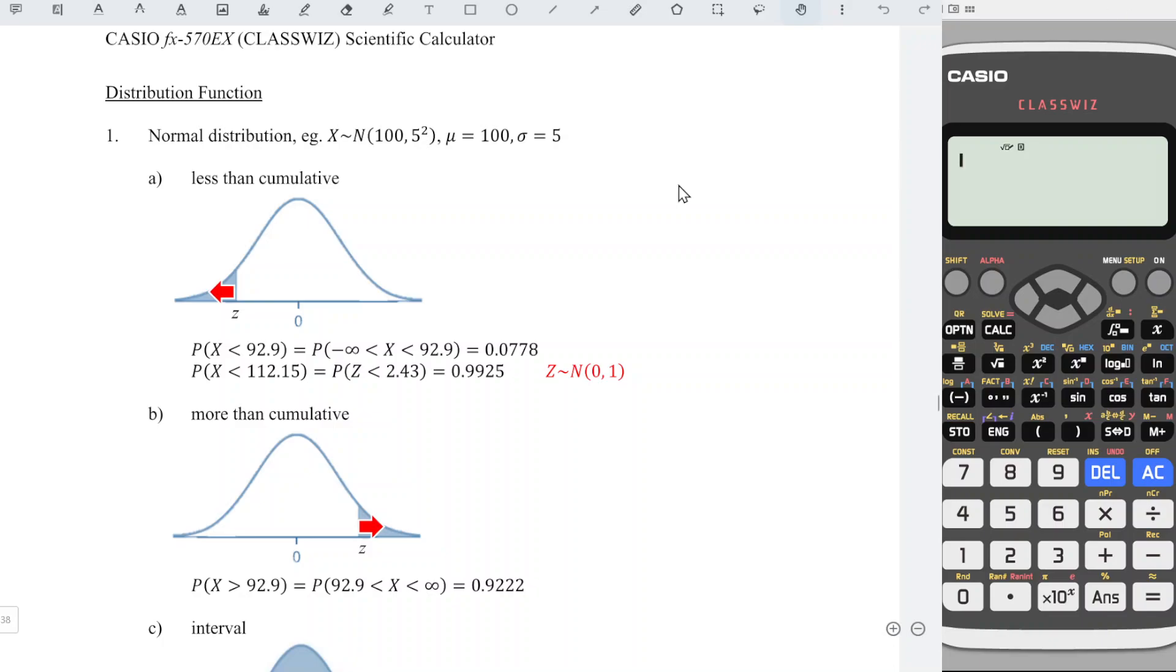We will learn how to obtain the probability for a normal distribution by using Casio calculator. Consider that random variable x follows a normal distribution with mean 100 and variance 5 squared. 1A: less than cumulative. If we are asked to determine probability of x less than 92.9, understand that the lower limit is negative infinity while the upper limit is 92.9. In order for us to obtain the probability...